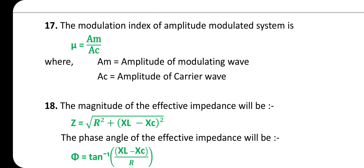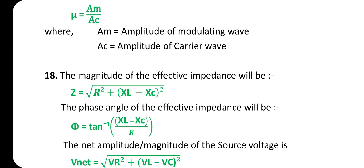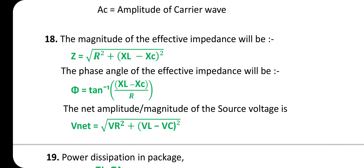Seventeenth one: The modulation index of an amplitude modulated system is μ = A_m / A_c, where A_m is the amplitude of the modulating wave and A_c is the amplitude of the carrier wave.